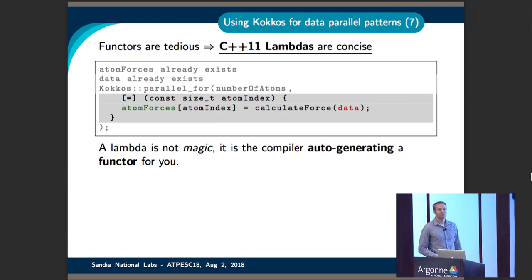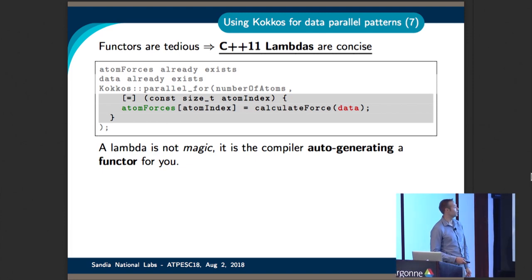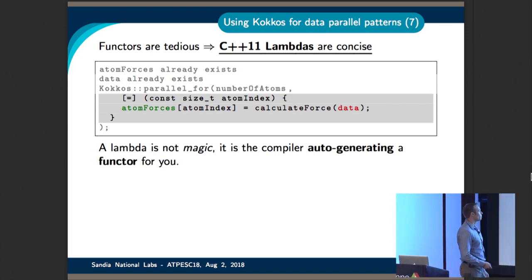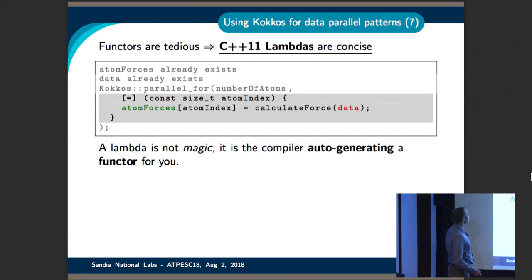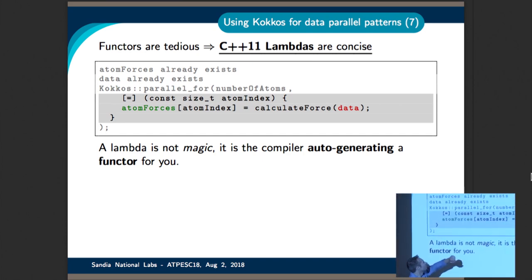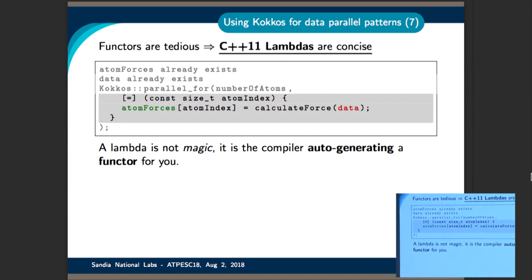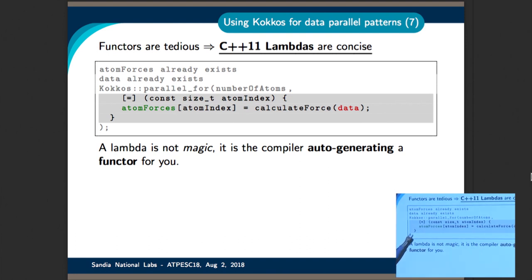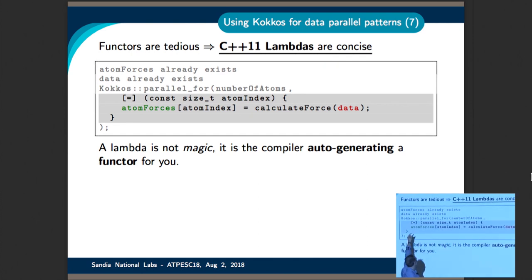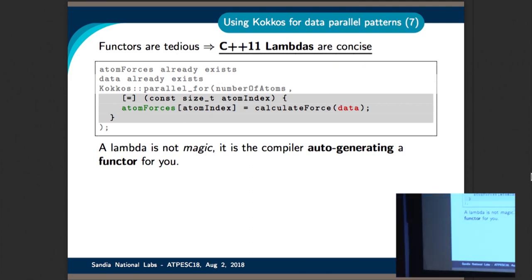Functors can be a bit tedious to write and not very readable. C++11 provides lambdas, which are much more concise and make code more readable — the compiler auto-generates a functor for you. In the parallel_for call, you pass your iteration range as the first argument, and instead of a functor, you pass a lambda. The lambda syntax has a capture clause (the bracket-equals-bracket syntax), then the argument which is your iteration index, and then enclosed within that is your computational body. This should look essentially like the operator() of a functor.